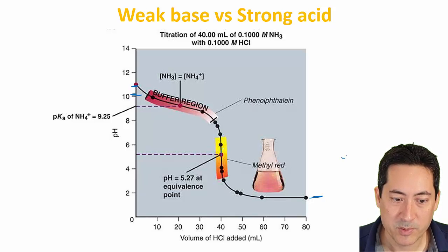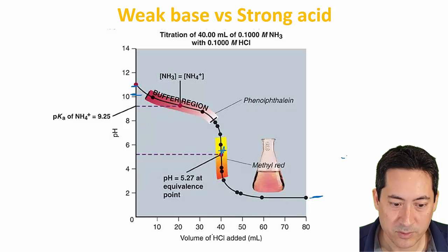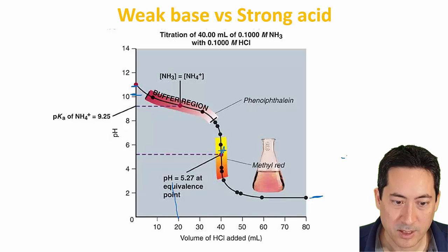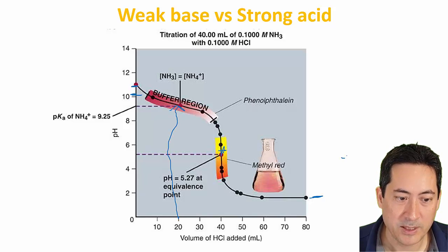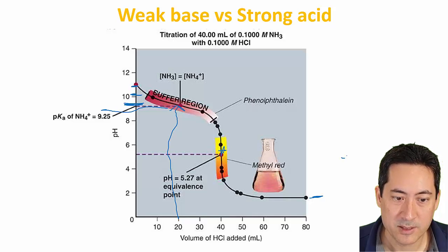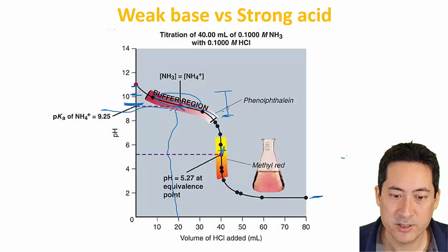You have the equivalence point here, 5.27. Half of this volume here, 40, should be about 20. That gives you the pKa of the acid red across here. So that's the buffer region. As you'll see, phenolphthalein detects pH changes from about 10 to 8 here from this graph. And as you see, it's nowhere near neutralized in that region.